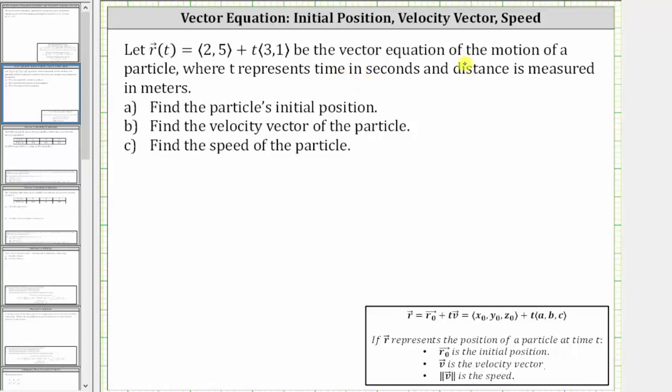Let r of t be the vector equation of the motion of a particle, where t represents time in seconds and distances measured in meters. We are asked to find the particle's initial position, the velocity vector, as well as the speed of the particle.